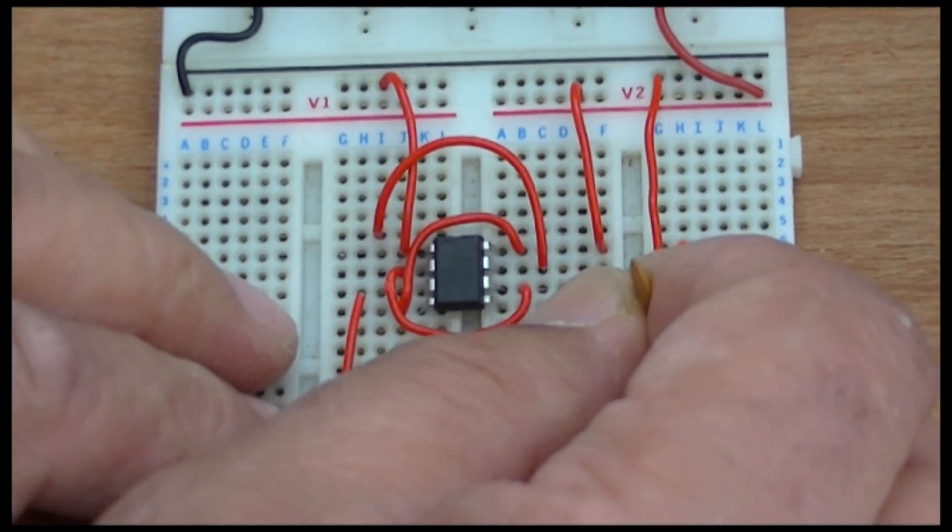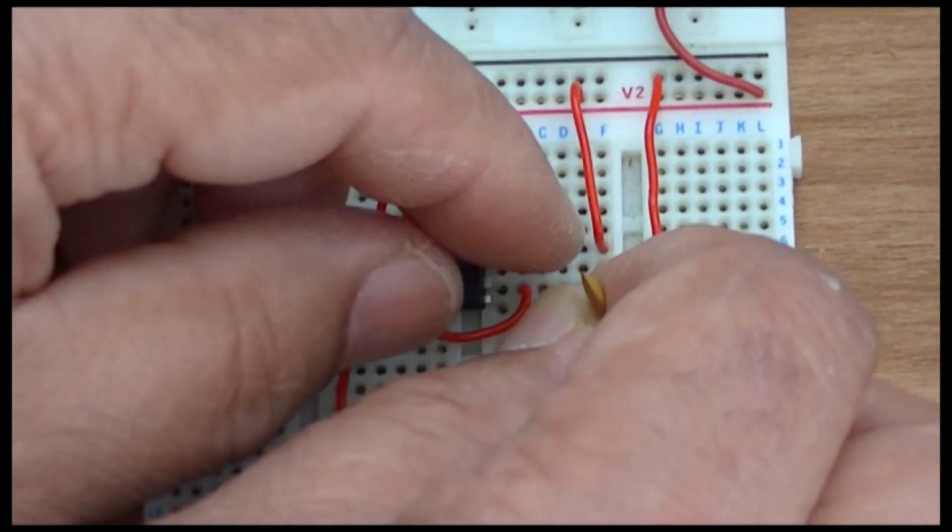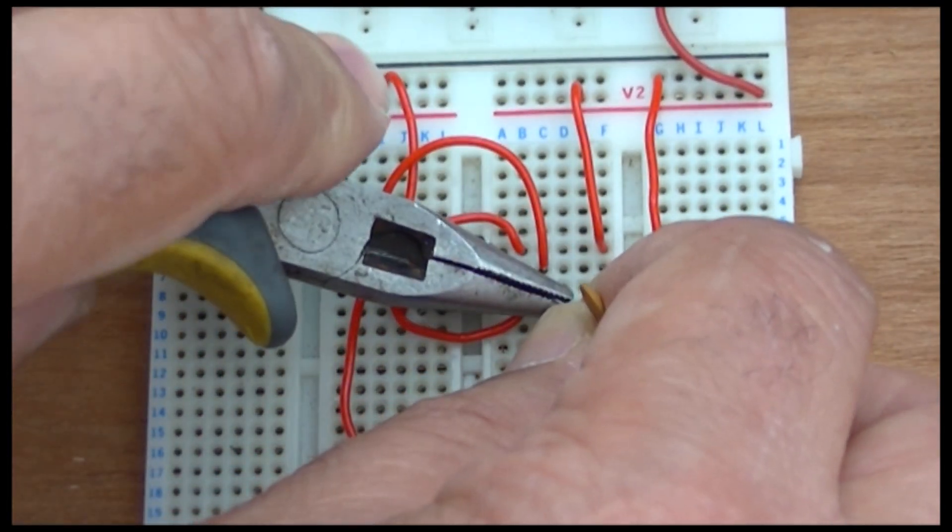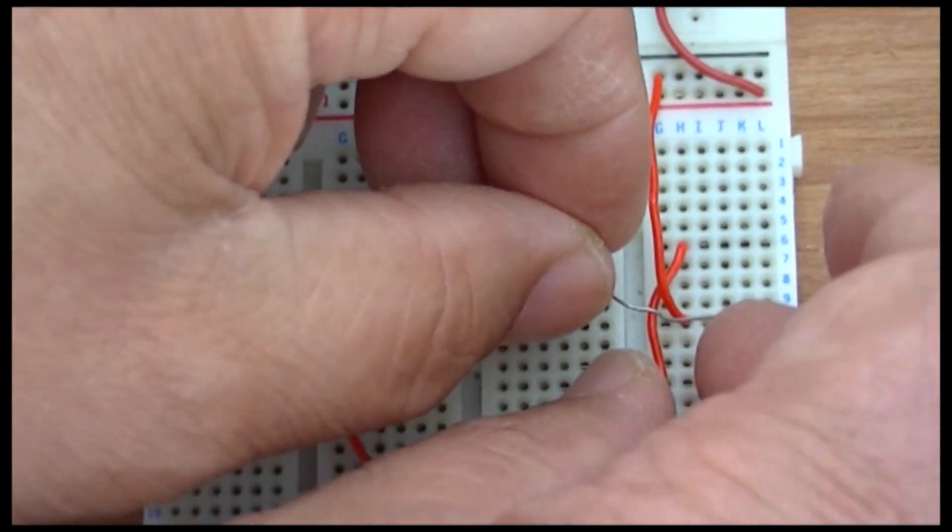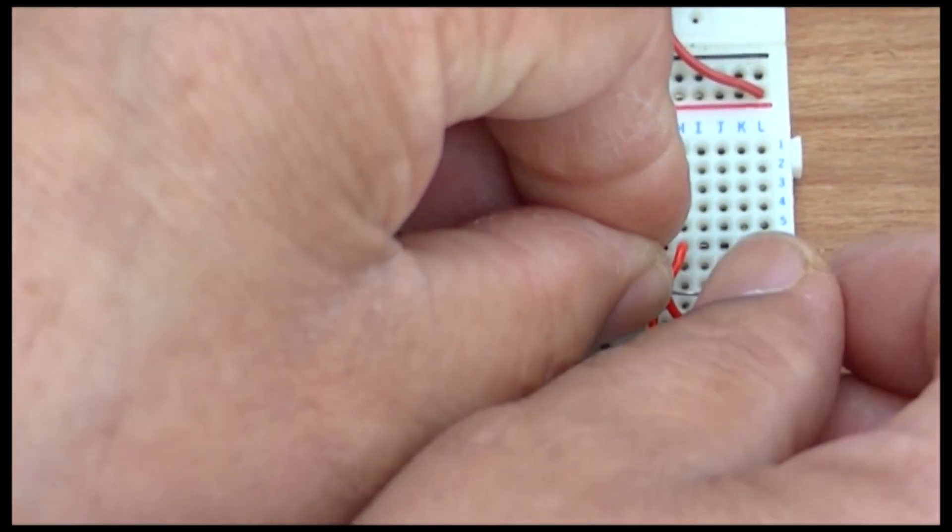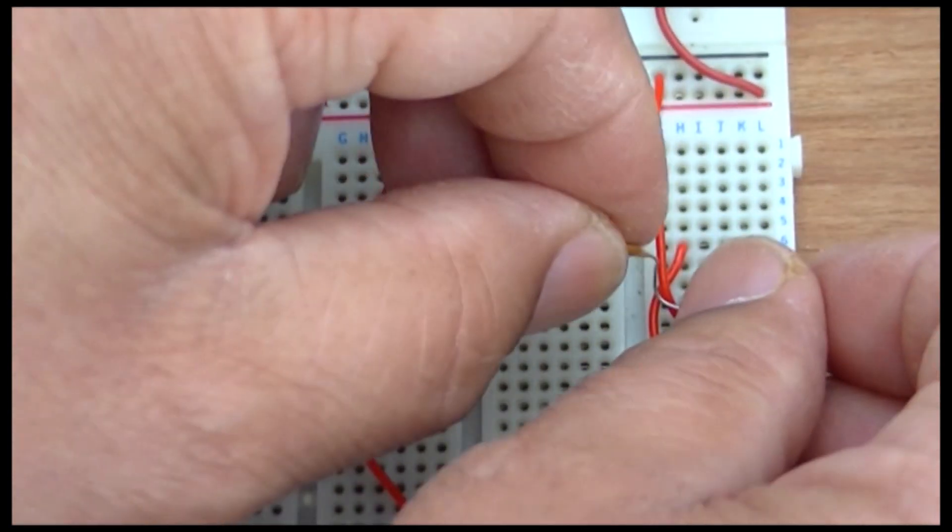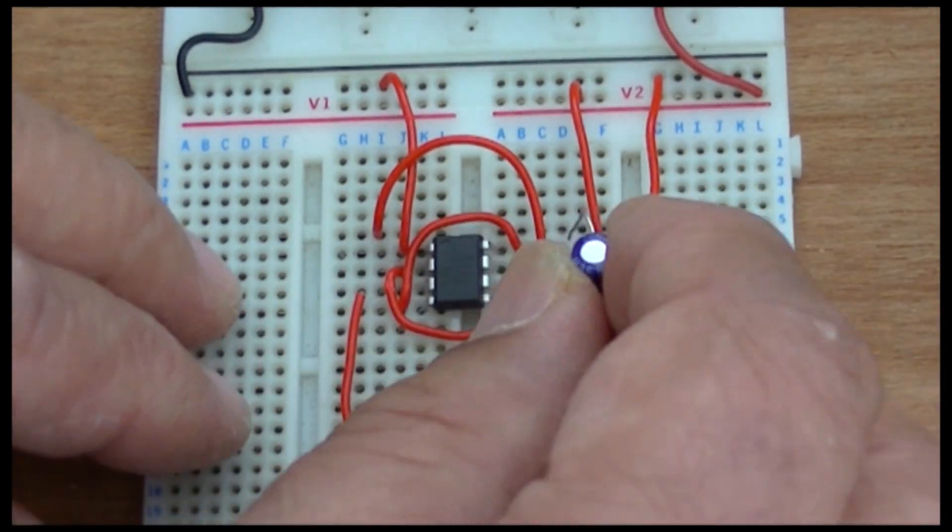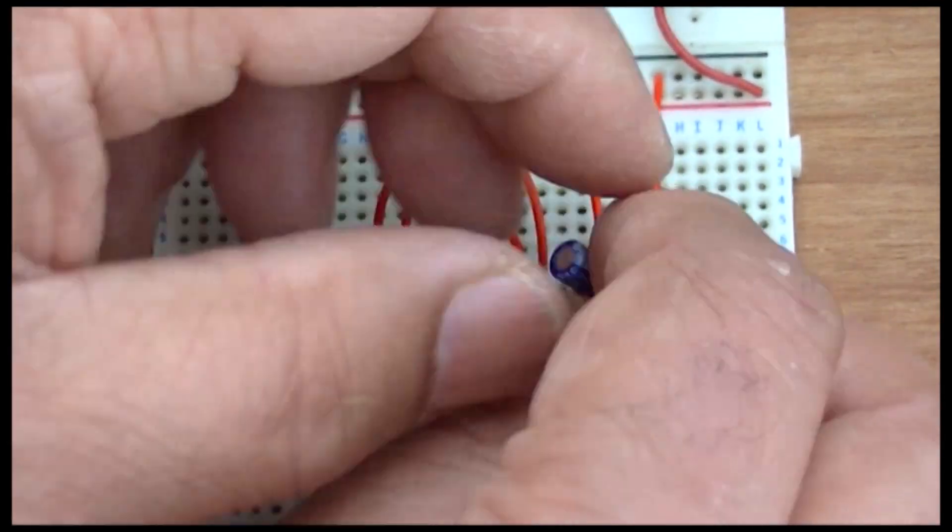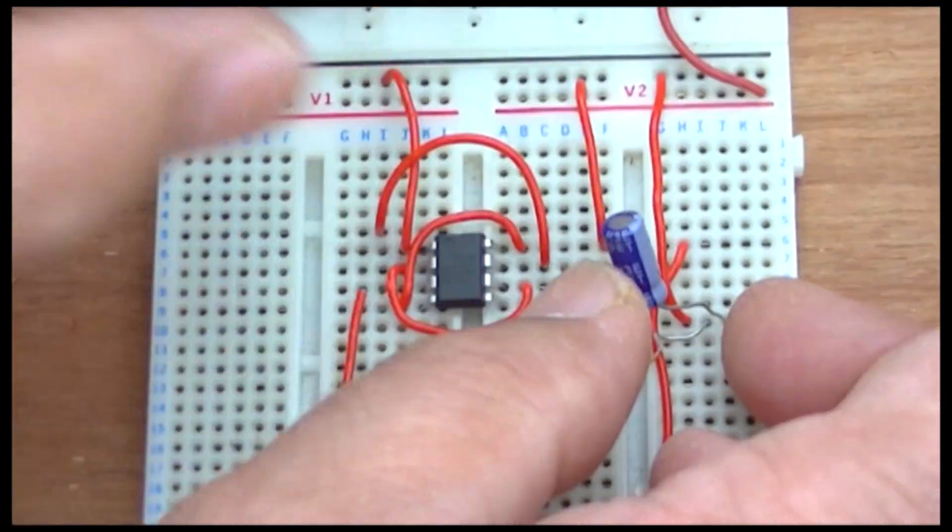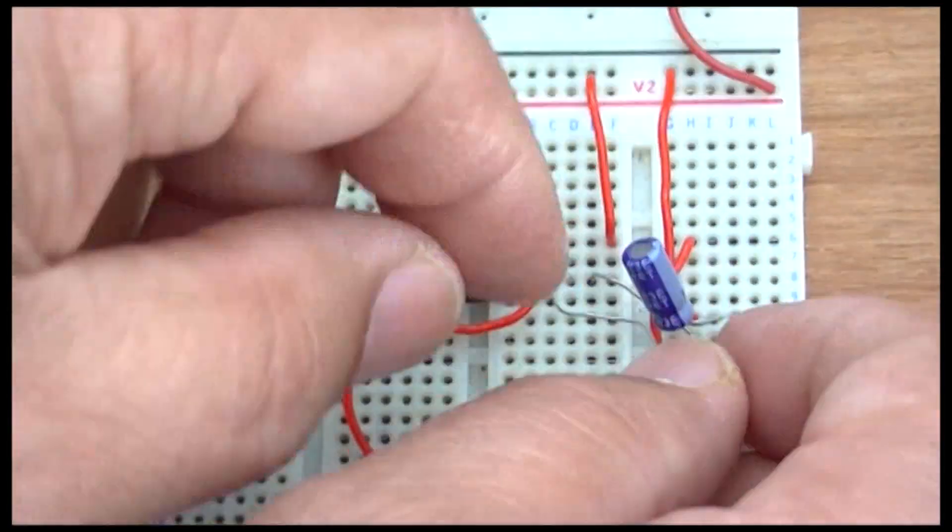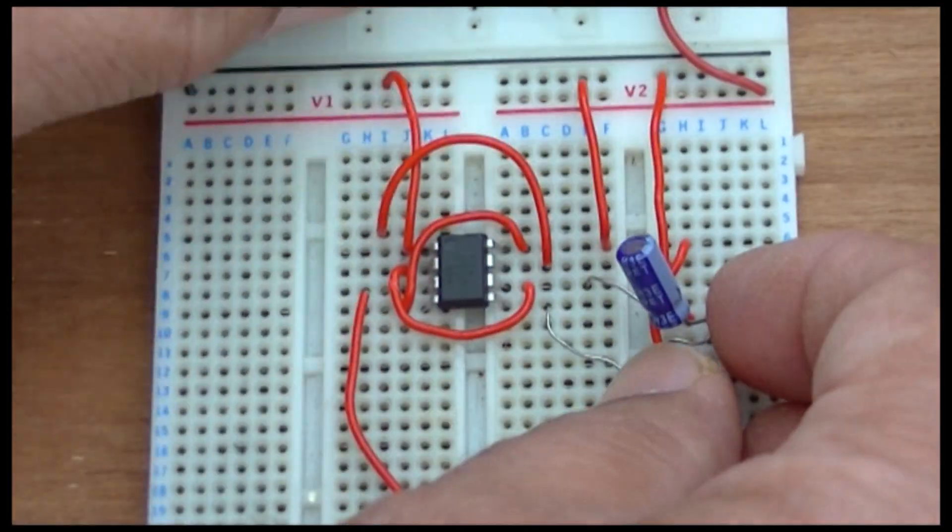So this capacitor is going from number five to negative, which will be here, number six. Of course, this capacitor has got positive and negative marked. I'm just going to move it away from everything.